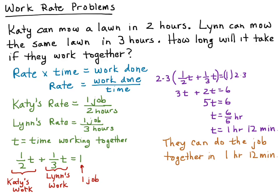A fifth of an hour—if you take 60 divided by 5—that's 12 minutes. So they're going to be working together for one hour and 12 minutes. You answer with a complete sentence: they can do the job together in one hour and 12 minutes.